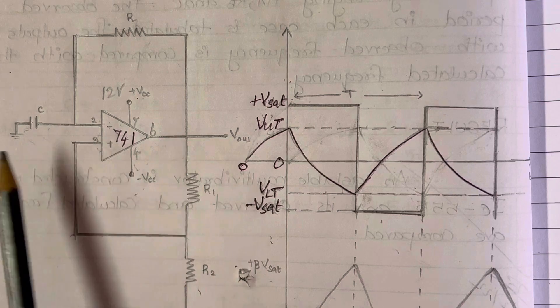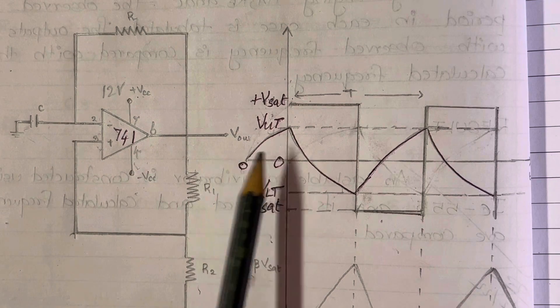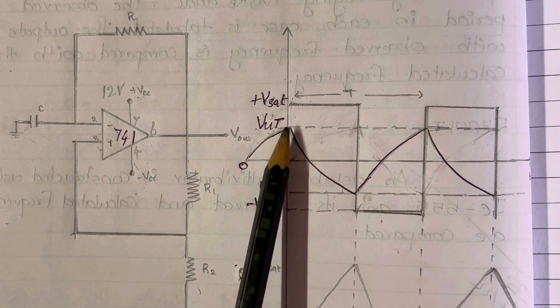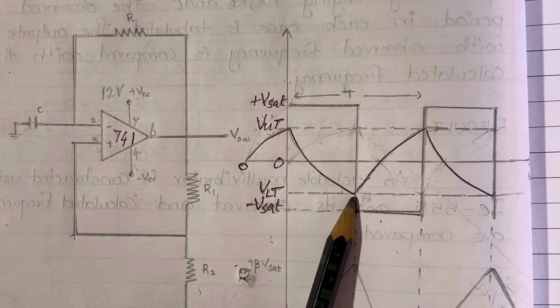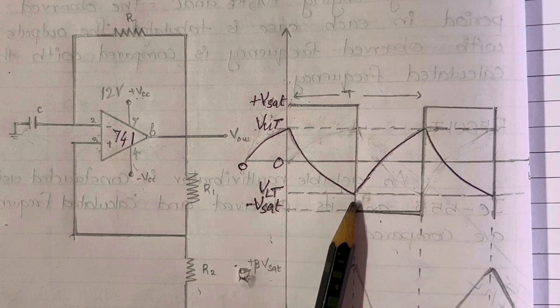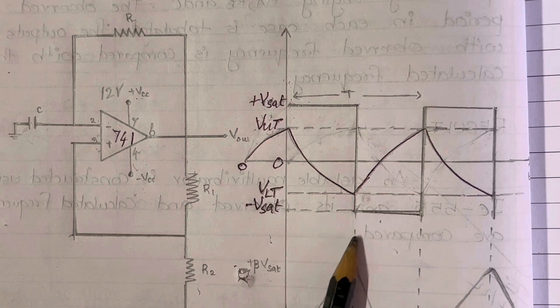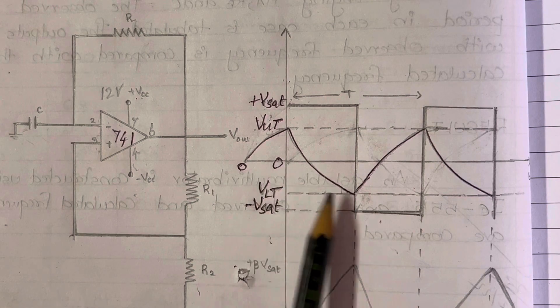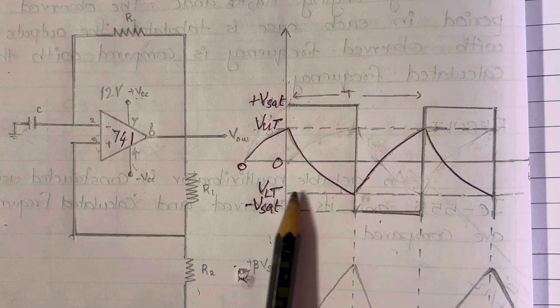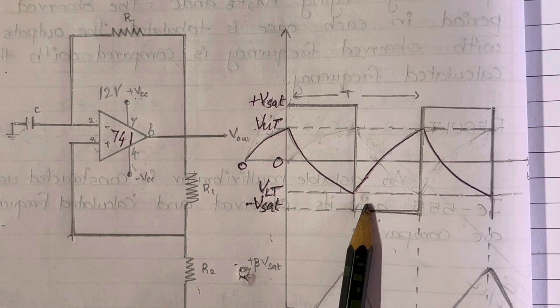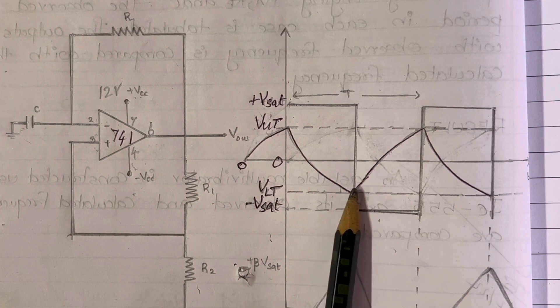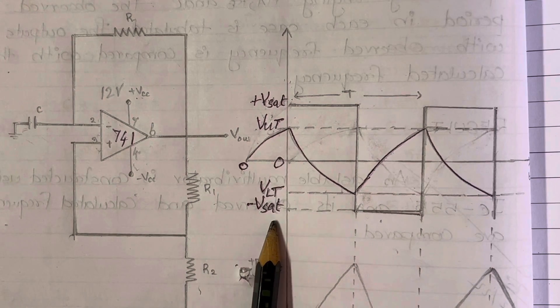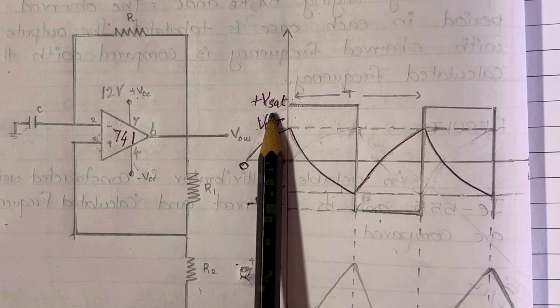Then the capacitor starts discharging. While discharging it goes down to reach 0, then it moves towards minus V saturation. Then at the negative side, when it reaches lower threshold value of the potential, then again at this state, the output changes from minus V saturation to plus V saturation.